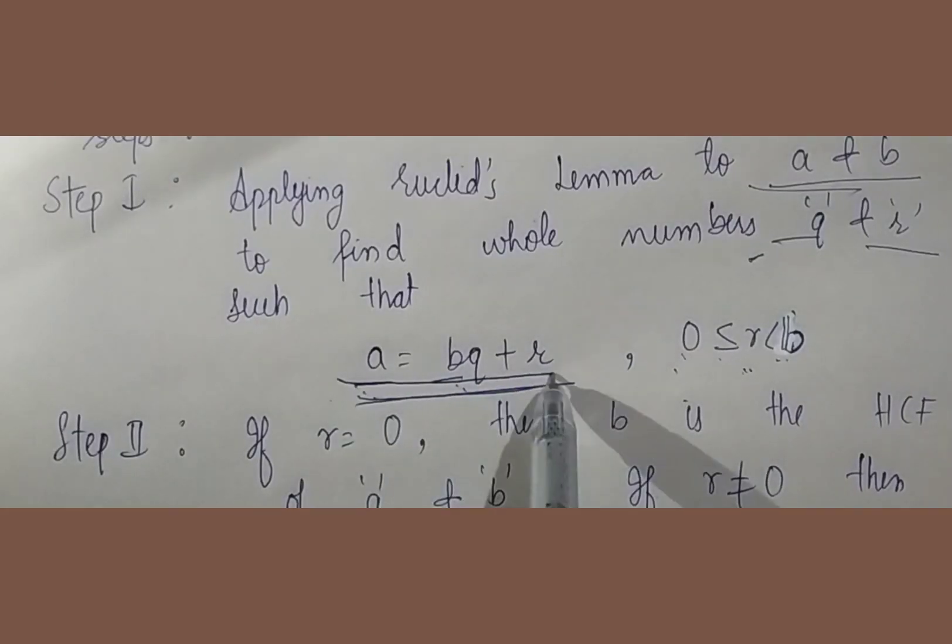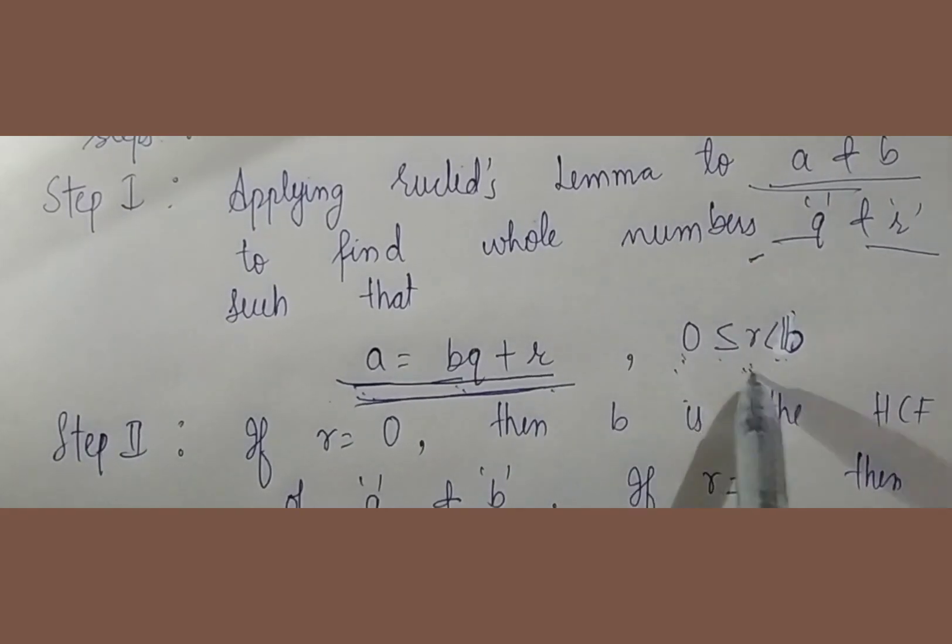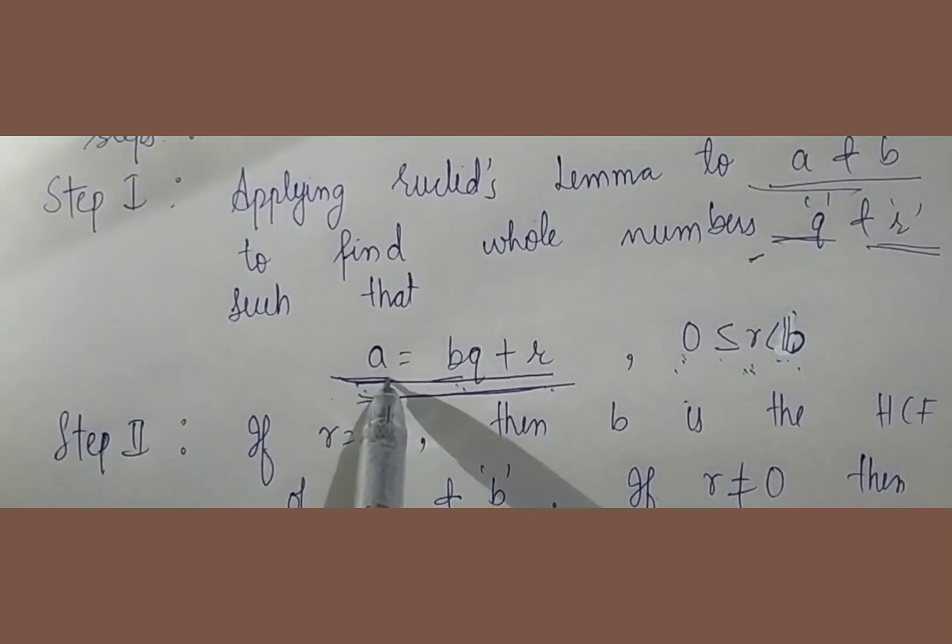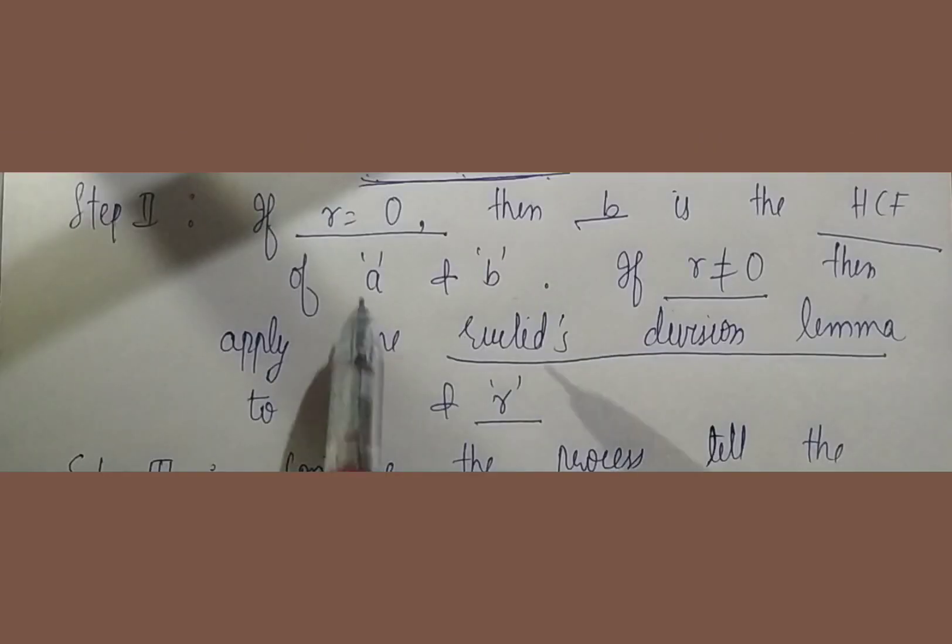And we will find the relation a equal to bq plus r, where r is greater than or equal to 0 and less than b, where q is the coefficient, r is the remainder, a is the dividend and b is the divisor.